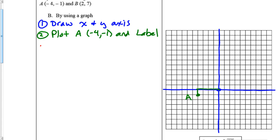So it should make sense that my next step is to plot B and label it. So I start back at the origin and I'm going to count over 2 and up 7. And I label that B.